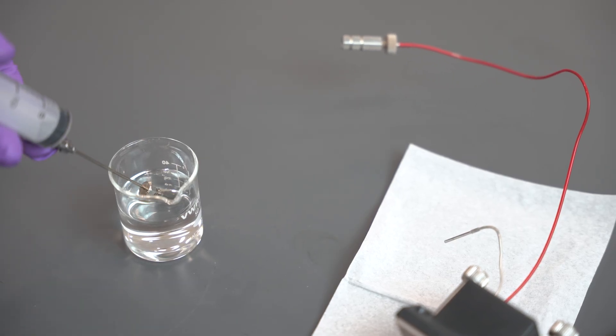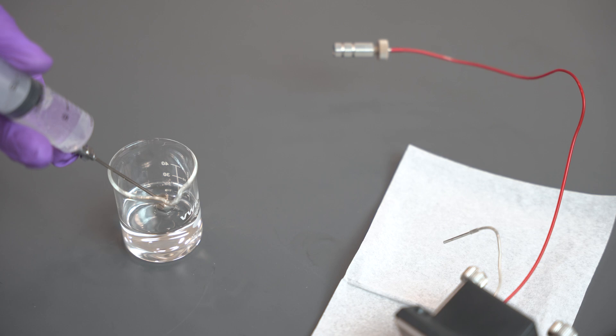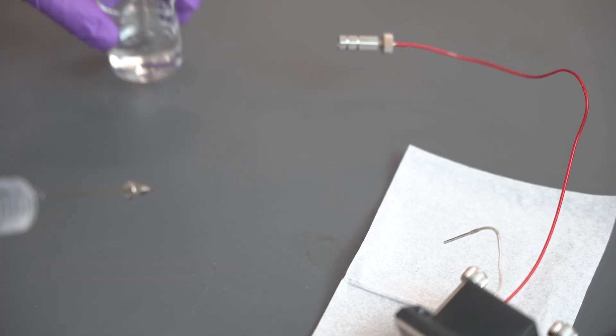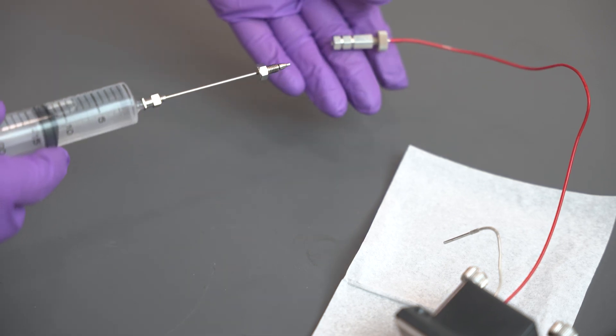Fill your syringe with 2-propanol. Attach the syringe with the needle that is equipped with the nut and ferrule to the inlet union of the flow cell.